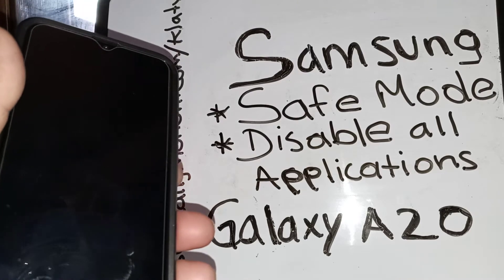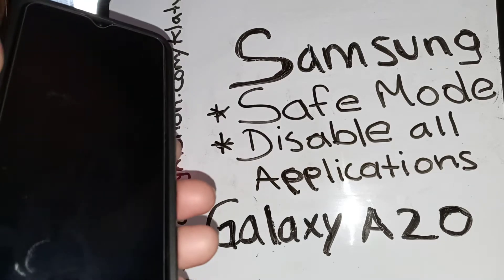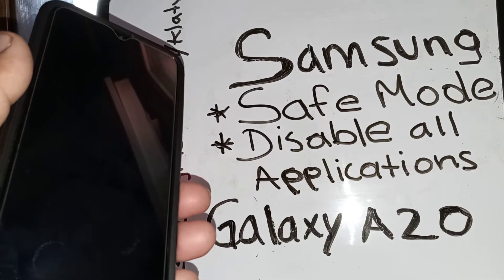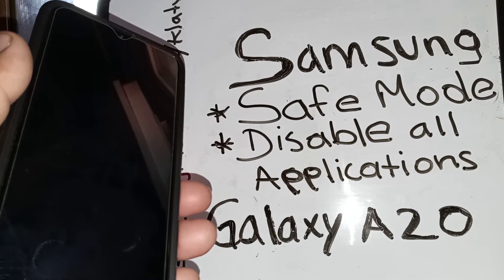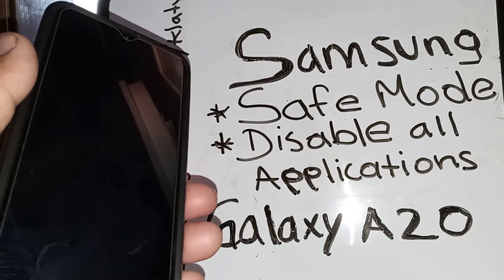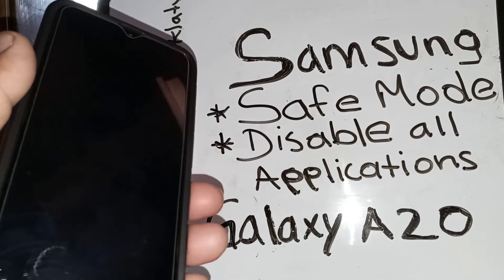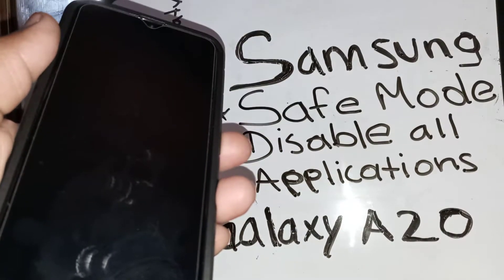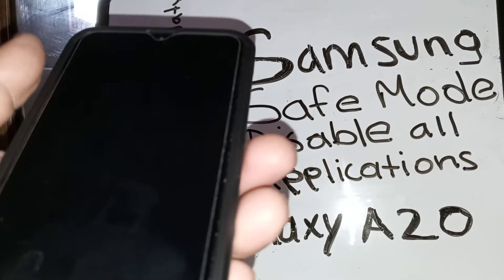Let's enter safe mode on this Samsung Galaxy A20. You may want to do this to disable all downloaded applications and protect sensitive information that some apps have, like your credit cards and other important information. To begin, let's power down the phone.